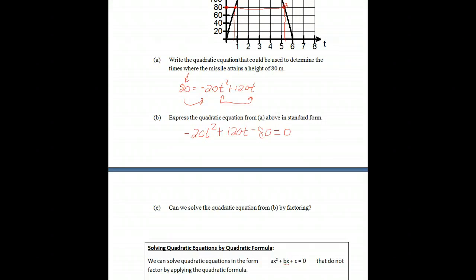And can we solve it by factoring? Well, the first step we could try is dividing everything here by a common factor, and that would be negative 20. Now, dividing each term by negative 20 in our quadratic equation, we have a simplified form. So t² - 6t, ignore that, that was a mistake, plus 4.